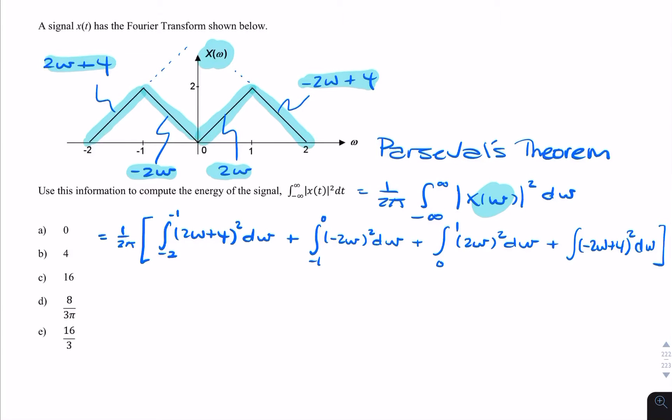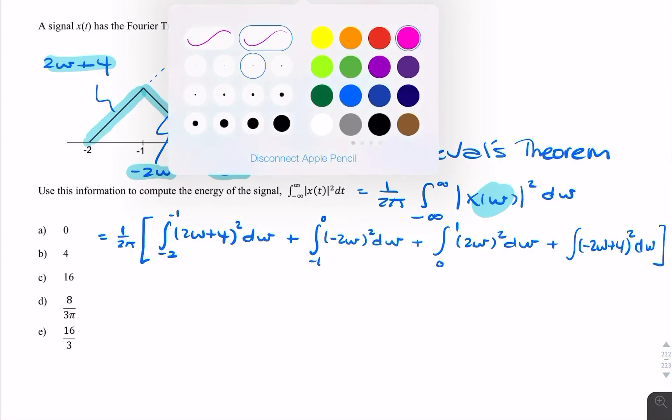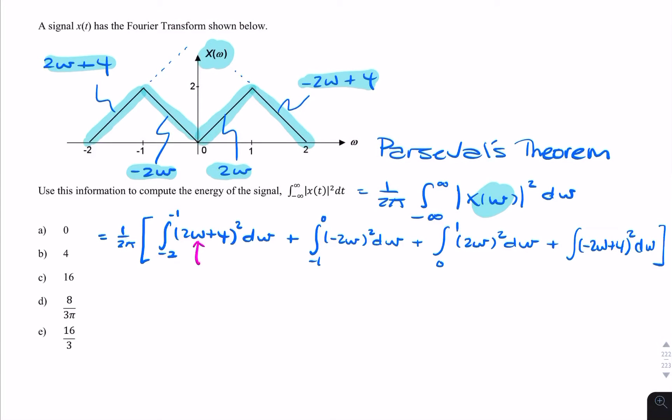This is a straightforward integration because you have ω dω. Then you just substitute the limits, add them all up, divide by 2π. And eventually the answer is 8 over 3π.